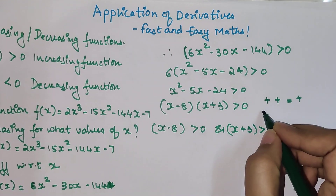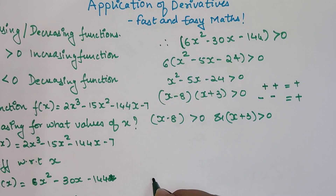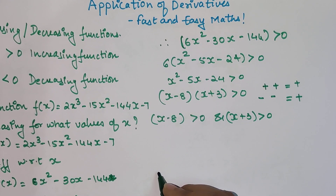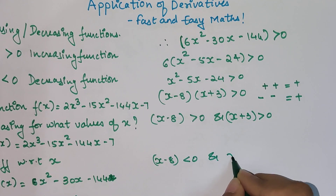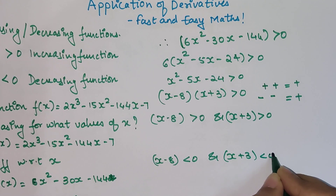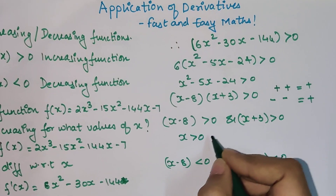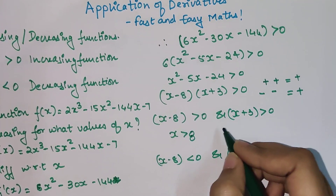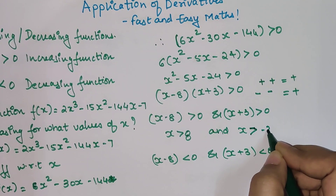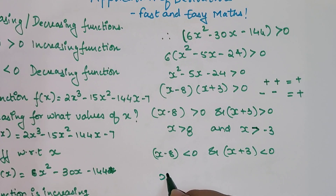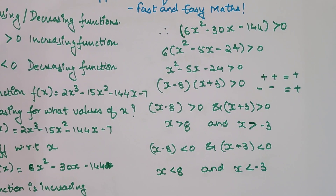That is the first scenario. Can negative × negative also give a positive? Yes. So the next scenario will be: x - 8 < 0 and x + 3 < 0. From the first scenario, x > 8 and x > -3. From the second scenario, x < 8 and x < -3.